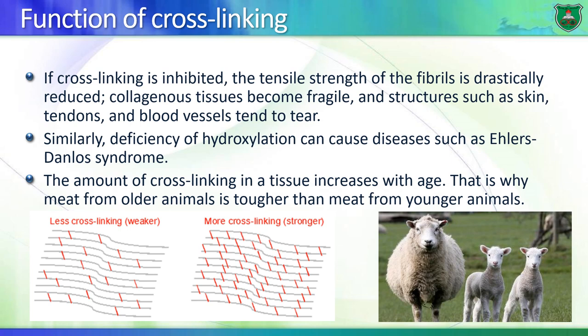Here is a funny fact: crosslinking increases with age — the older we get, the more crosslinking we have in our collagen molecules. The same is true with animals, and this is the reason why we prefer to eat lamb versus meat from older sheep — because it's harder to chew meat from older animals, whereas meat from lamb is more tender.